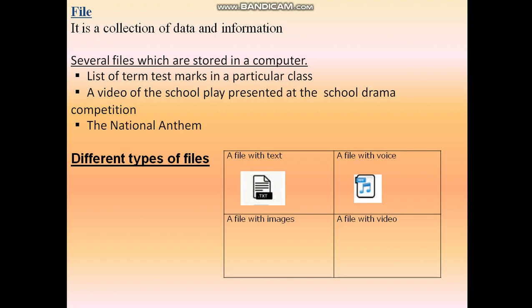A voice file is connected to audio and text, called MP3. A file with images — the image file format is JPG. This is the file with video. A video file is also a type of file, such as AVI.